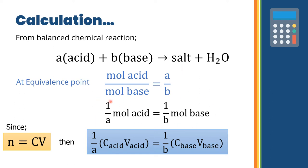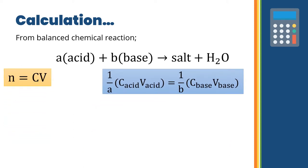When we get this relationship between the number of moles of acid and base, we know that the number of moles of any substance can be calculated from the concentration and volume of the solution. Number of moles equals concentration of solution multiplied by volume of the solution. Substituting this in, on the acid side: concentration of acid times volume of acid equals the ratio times concentration of base times volume of base. Now let's look at the units for concentration and volume.